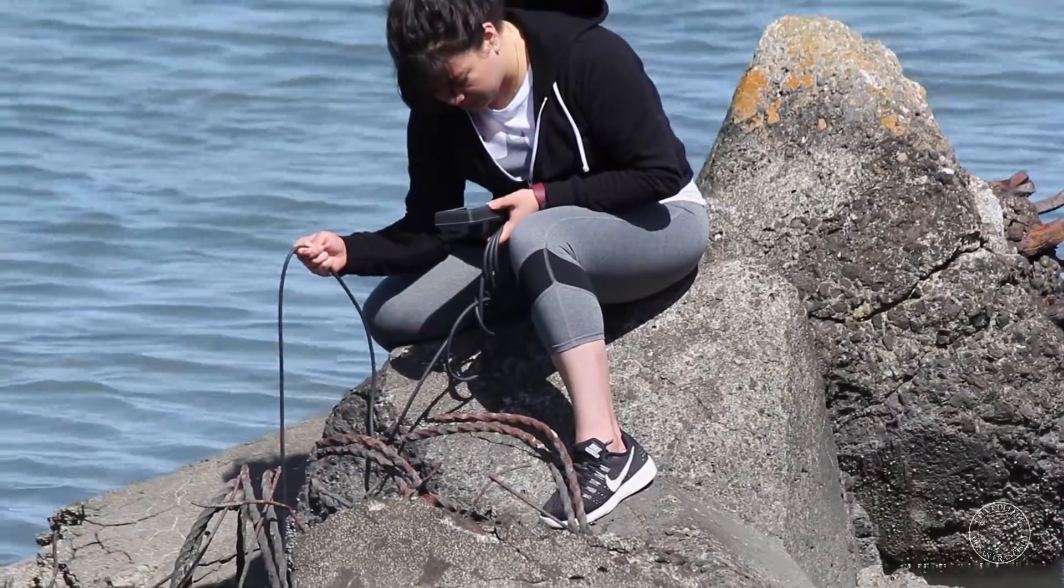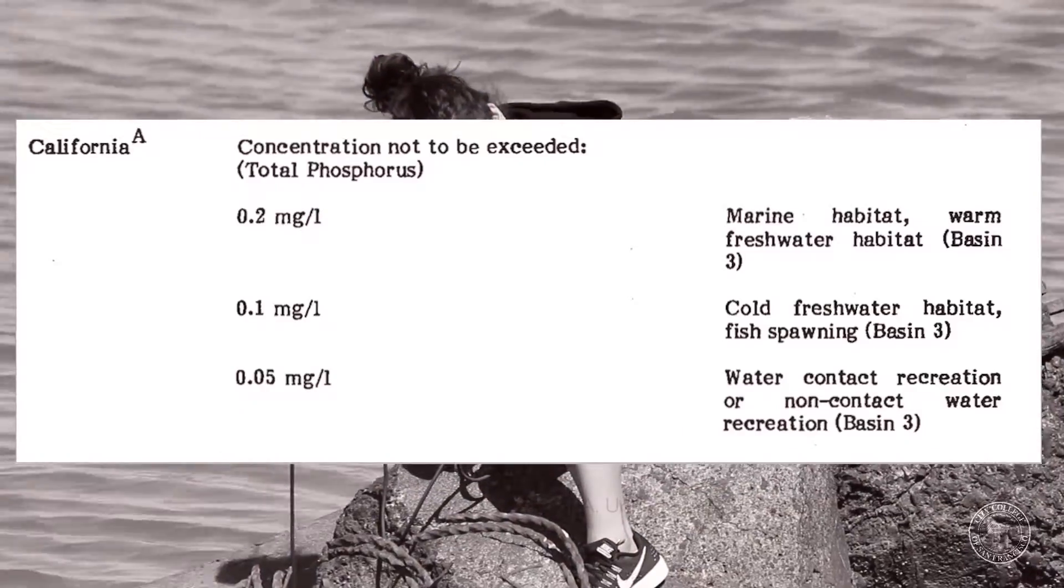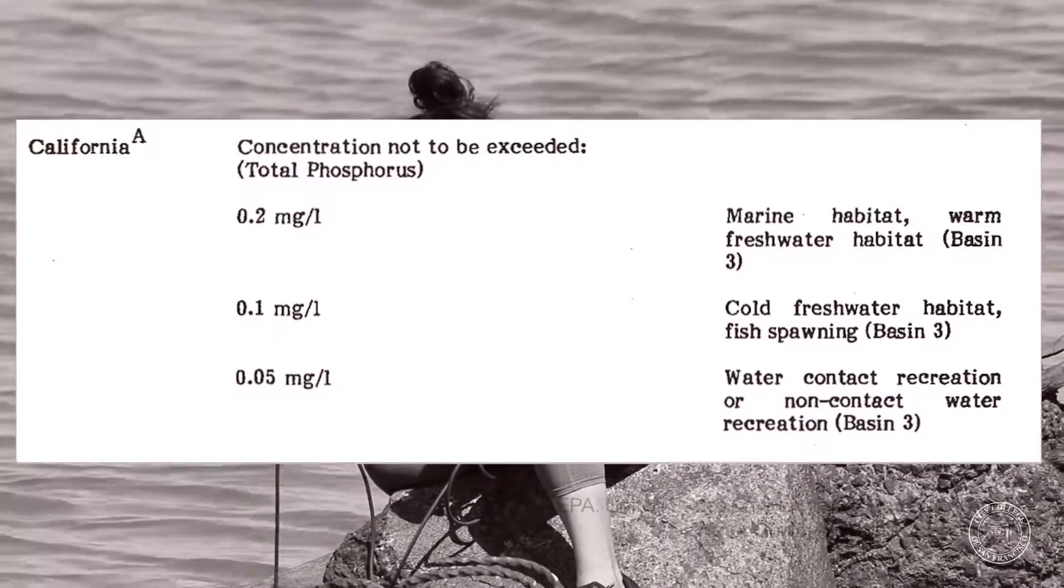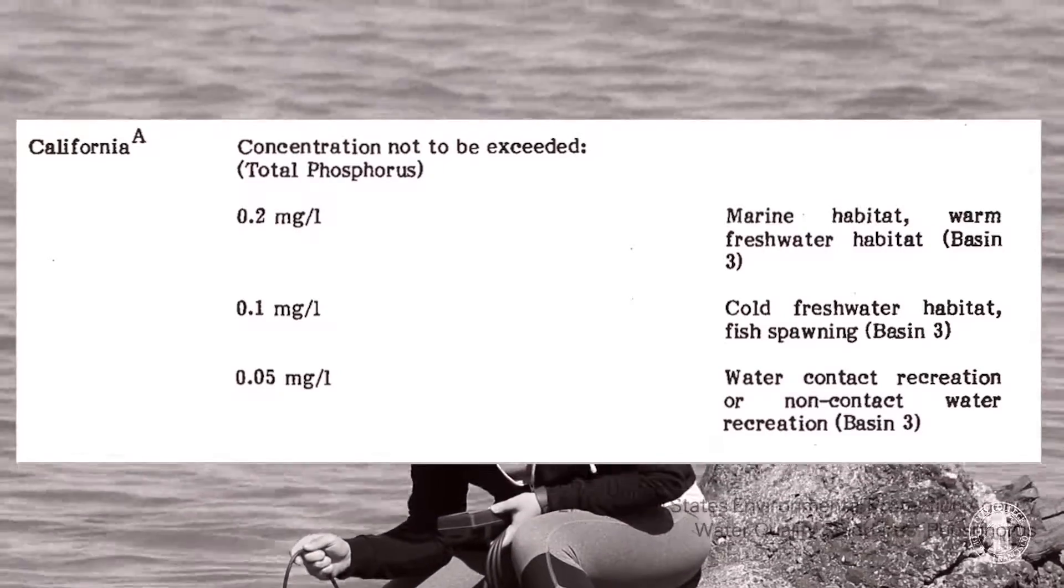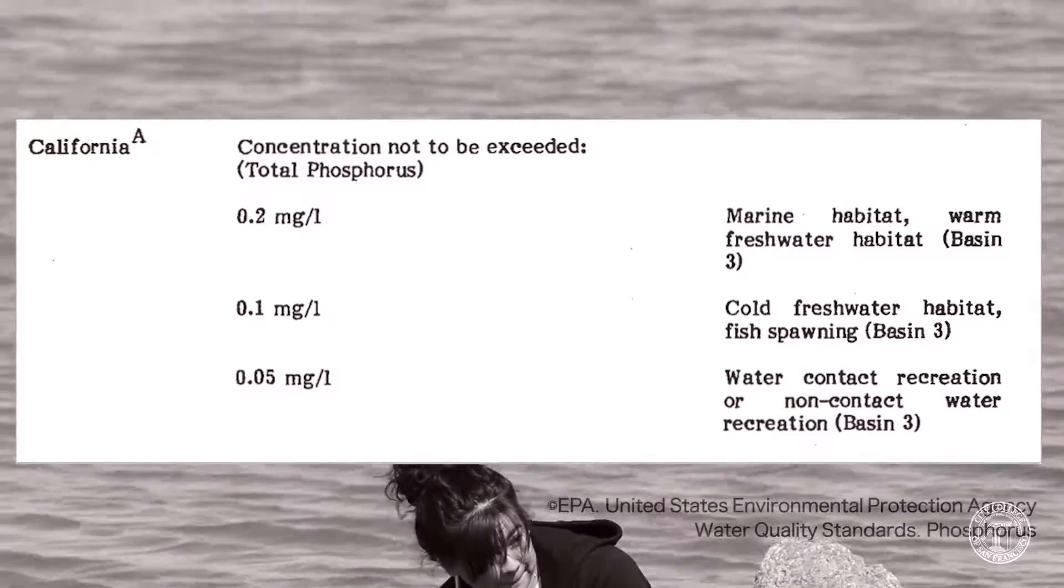By California regulations, the recreational water limit for total phosphorus is 0.05 milligrams per milliliter.